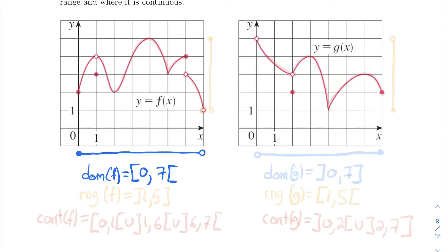What about the range? Well, the smallest possible value is this hollow dot here, so it starts at 1, not including 1, and the graph has Y values all the way up to the top at 5. So the range is from 1 to 5. And now the continuous domain — the trick is just to be a tracer. Try to trace your graph, and just think about when you need to lift your pen. Those points where you need to lift your pen are not part of the continuous domain.